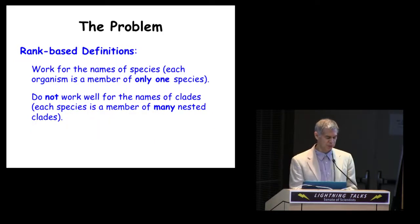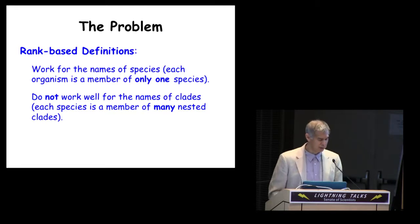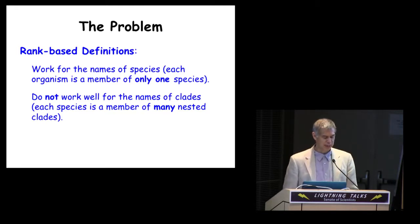Now, these rank-based definitions work okay for species names for reasons that I don't have time to describe. They don't, however, work well for clade names, and the reason is that clades form nested series, and this is why the traditional definition employs a taxonomic rank, which is needed to specify to which of the many nested clades the name should be applied.